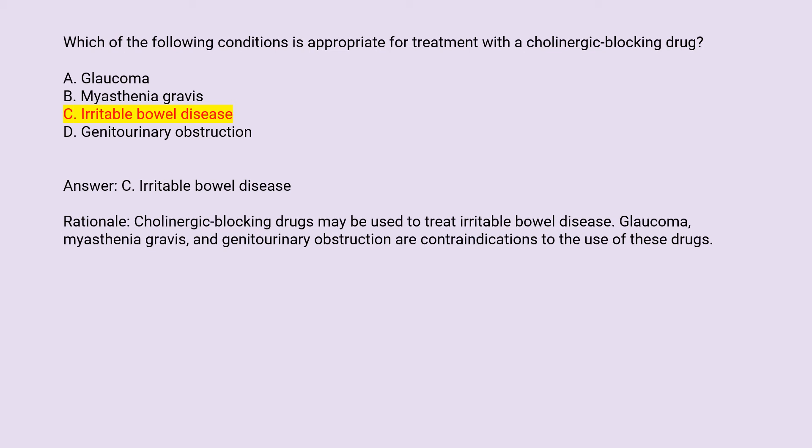Answer: C. Irritable bowel disease. Rationale: Cholinergic blocking drugs may be used to treat irritable bowel disease. Glaucoma, myasthenia gravis, and genitourinary obstruction are contraindications to the use of these drugs.